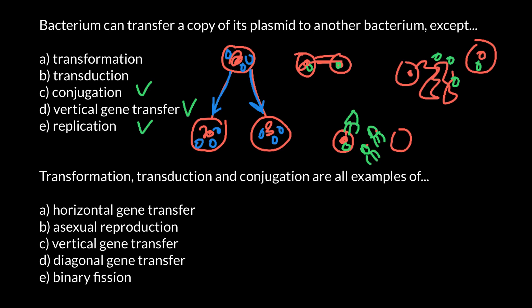Therefore, a bacteriophage cannot transfer a whole plasmid into another bacterium. The correct answer is transduction — transduction is the example where plasmids cannot be transferred. All the rest — transformation, conjugation, vertical gene transfer, and replication — are examples where plasmids can be transferred from one bacterium to another. Next question: transformation, transduction, and conjugation are all examples of what?